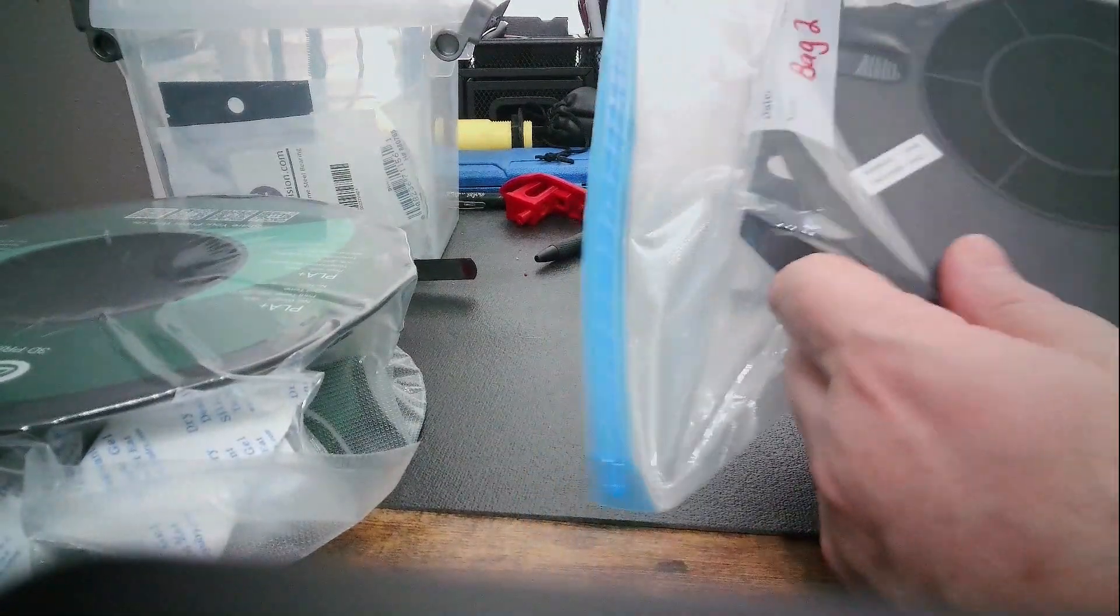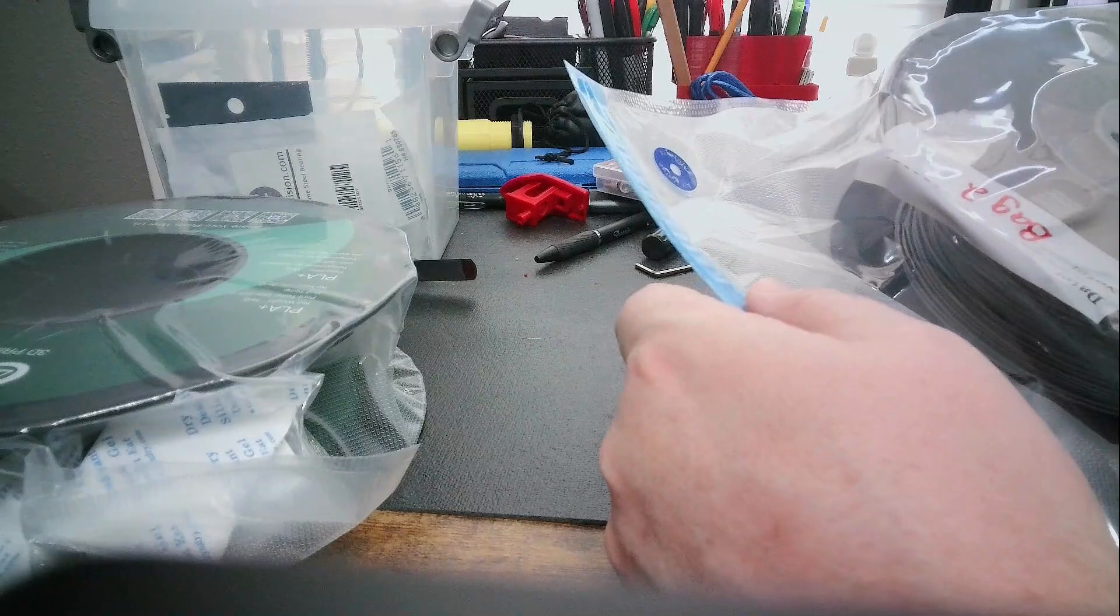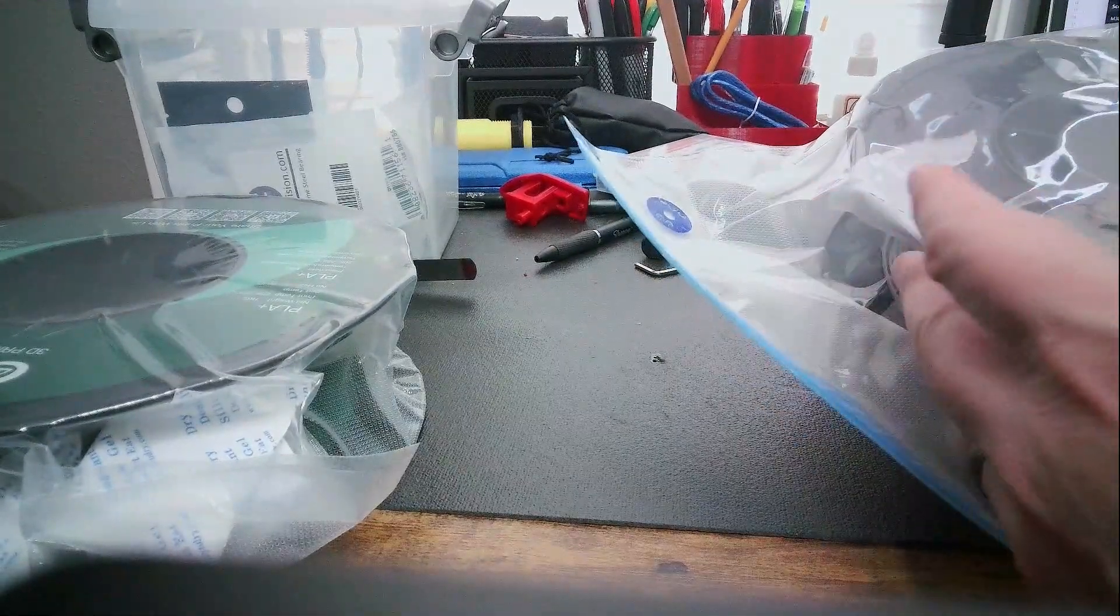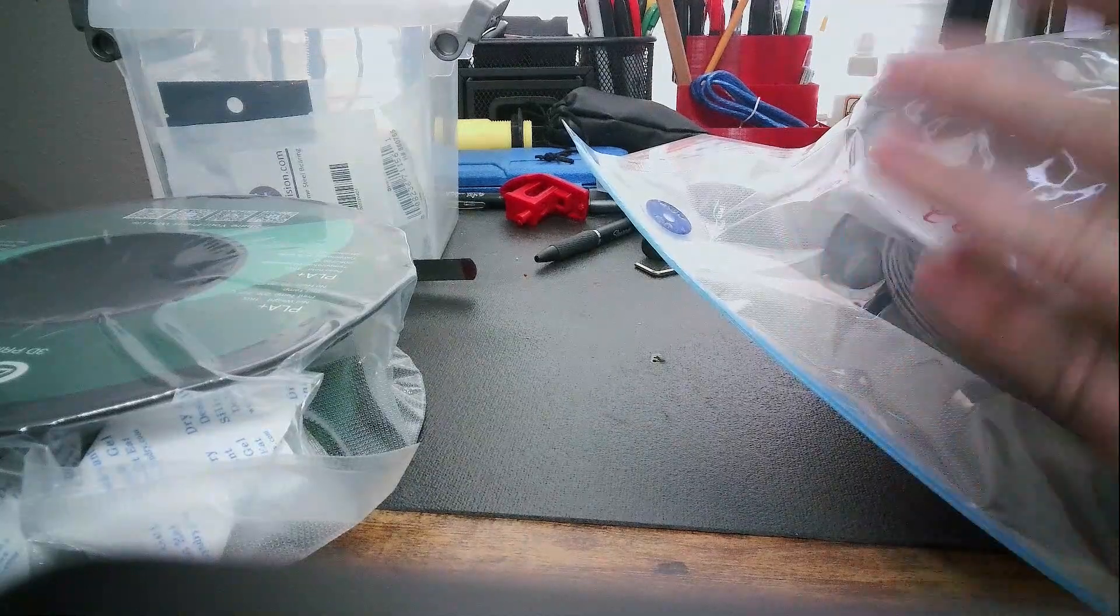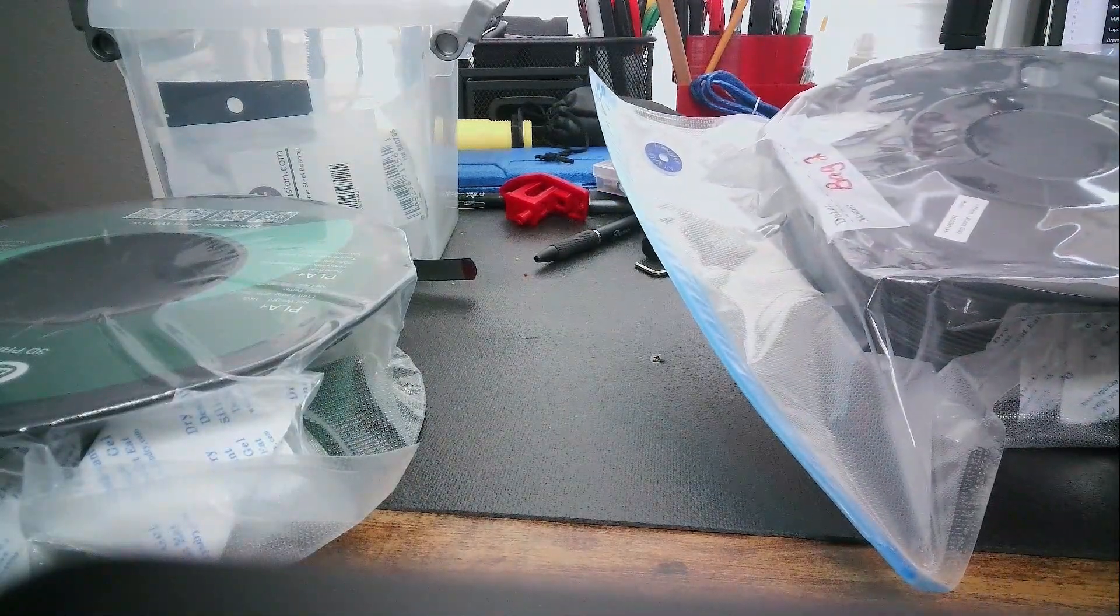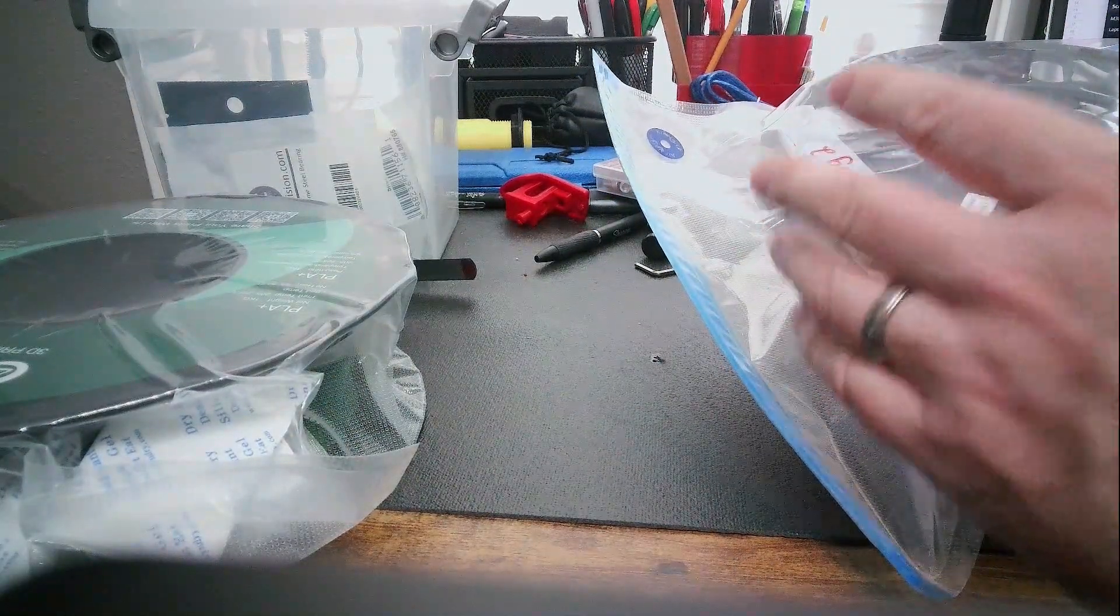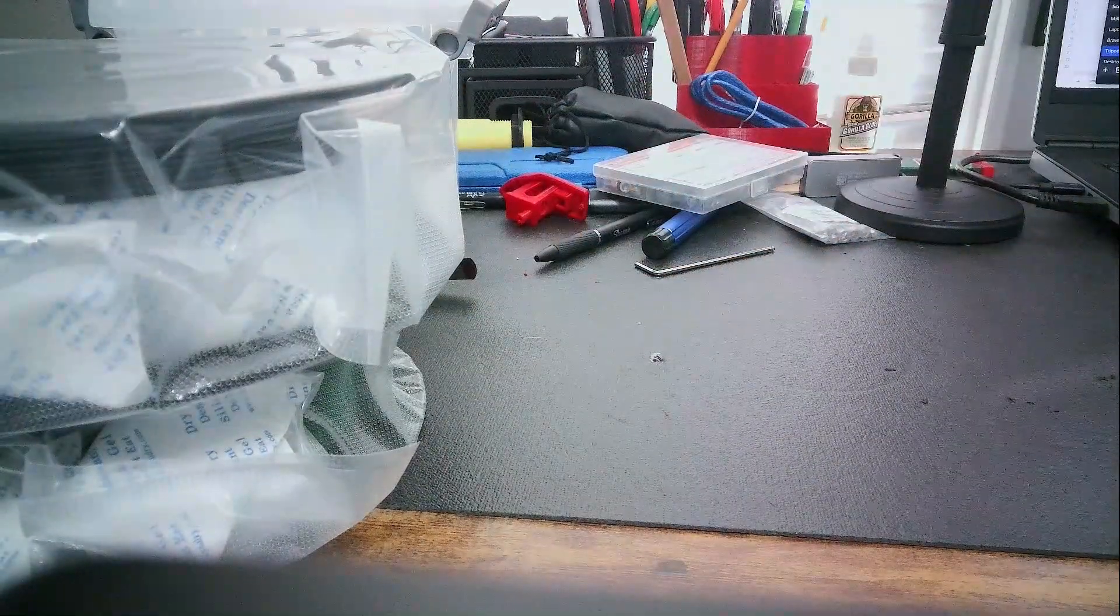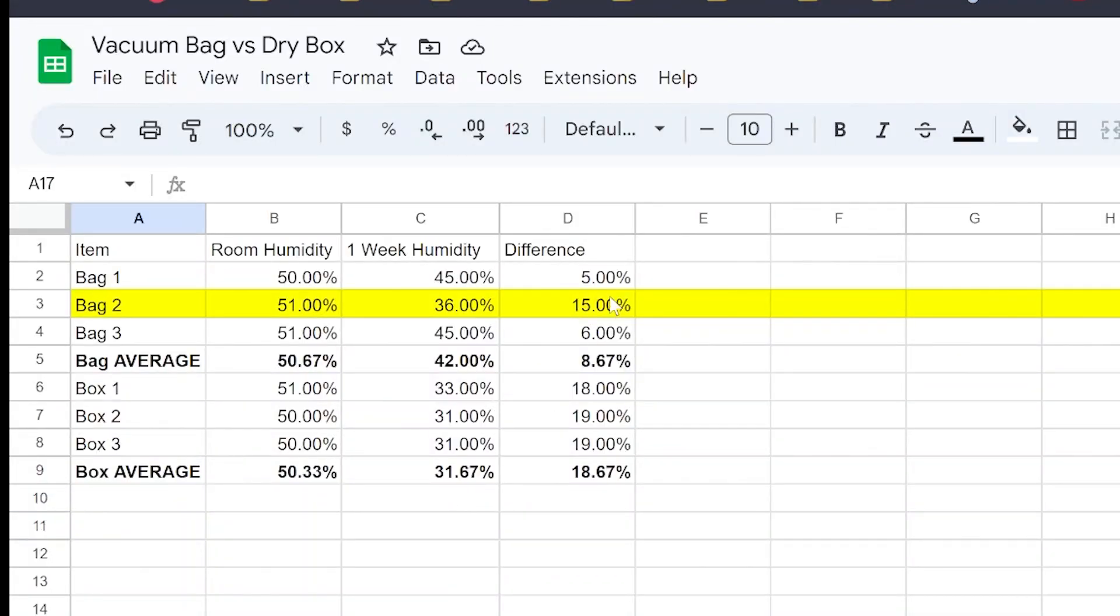What this leads me to believe is I probably need to try to get some heavy duty, really big sealable bags and then just see what the difference is. If I just throw desiccant in there, don't even bother with vacuuming them and see what the difference is with humidity. If I had to guess, going back over to my spreadsheet, what I'd find is the bags were almost as good as the dry boxes.